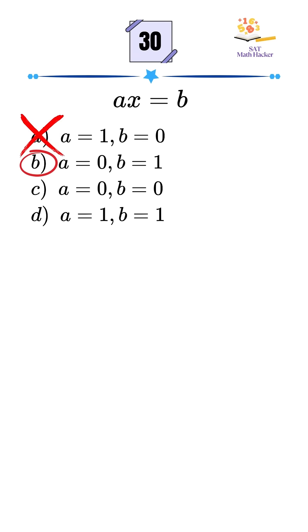Option B. A equals 0 and B equals 1. That gives us 0 equals 1, which is false. No solution. Eliminate that, too.